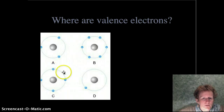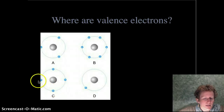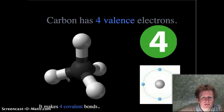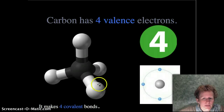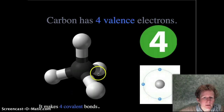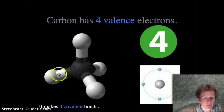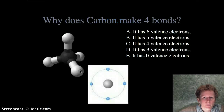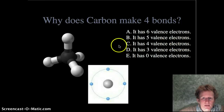Carbon has four valence electrons — those are the electrons in the outer shell of the atom. So it can make four covalent bonds. You can see how these four valence electrons make four covalent bonds. This is pretty simple here — it's just bonding to four hydrogens. These four valence electrons make four bonds.